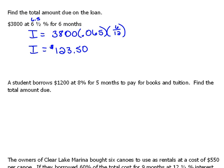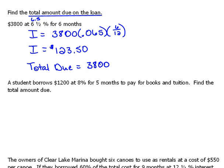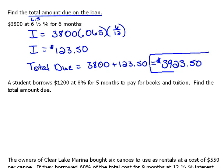This is our interest. We don't just want our interest, though — we are supposed to find the total amount due on the loan. So the total amount due is going to be the $3,800 that we originally borrowed plus the interest of $123.50. When we add these two things together, we get $3,923.50. This is the total amount that we're going to have to pay back over the life of this loan.